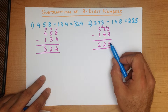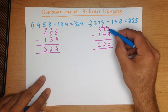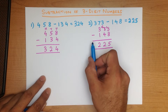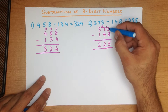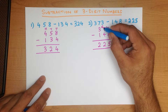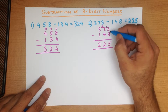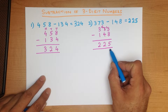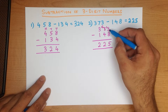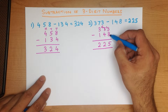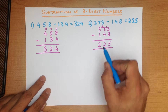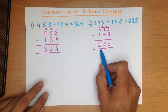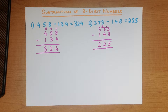Do you see what we did here? If the first number is smaller than the one below it and we are minusing, we take a 10 from the number next to it. The 7 became a 6 and we put 1 here, so the units column became 13 minus 8, the tens column became 6 minus 4, and the hundreds remained as 3 minus 1.